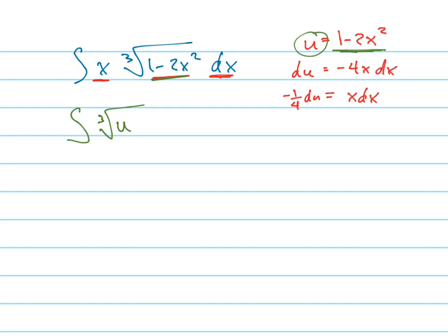and here's my x dx. x dx is negative 1 fourth du, so I'm going to put the negative 1 fourth scalar out and put the du in.